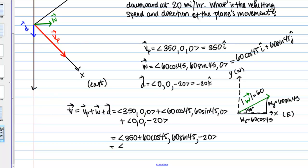And now just so we have a better sense of what's going on here, let me go ahead and get some approximations for each of these values. So 350 plus 60 cosine 45 is about 392.4, and this would be all in miles per hour. And then 60 sine 45 is about 42.4. And then we have our negative 20.